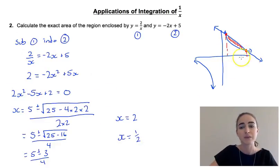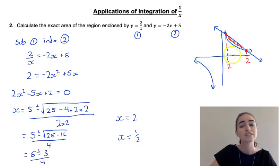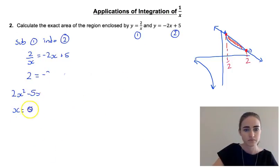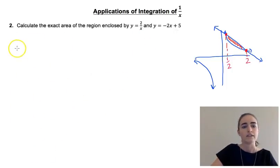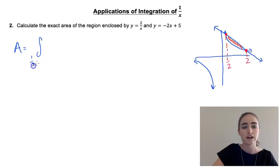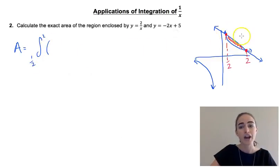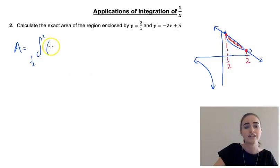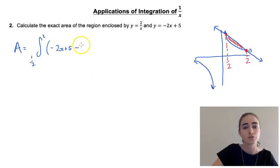So this tells us that the points of intersection have x-coordinates of 2 and one half, giving us our upper and lower bounds for our integral. Now to find our area we're going to take the integral between one half and 2, and subtract the bottom function from the top function. The top function is our straight line, so we have minus 2x plus 5, minus the function underneath which is 2 over x, integrated with respect to x.